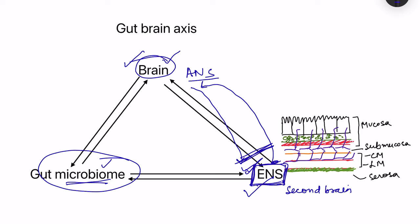The gut microbiome also affects the outflow from the brain. This bi-directional exchange of information between the brain and gut is known as the gut-brain axis. The brain also influences the gut microbiome — for example, in severe or chronic stress, it affects the permeability of the epithelial layers of the gastrointestinal tract, affecting how the gut microbiome impacts functional aspects.